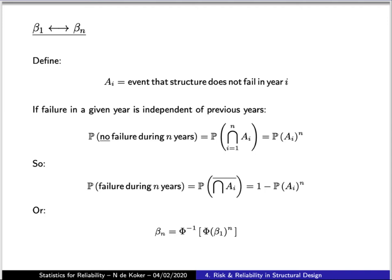So let's first look at how we can transform reliability values between different time frames. So we will generally encounter beta values that are given either in terms of an annual failure probability or in terms of a failure during the lifetime of the structure. Now the easiest way of transforming between the two is to think in terms of the probabilities of the structure not failing.